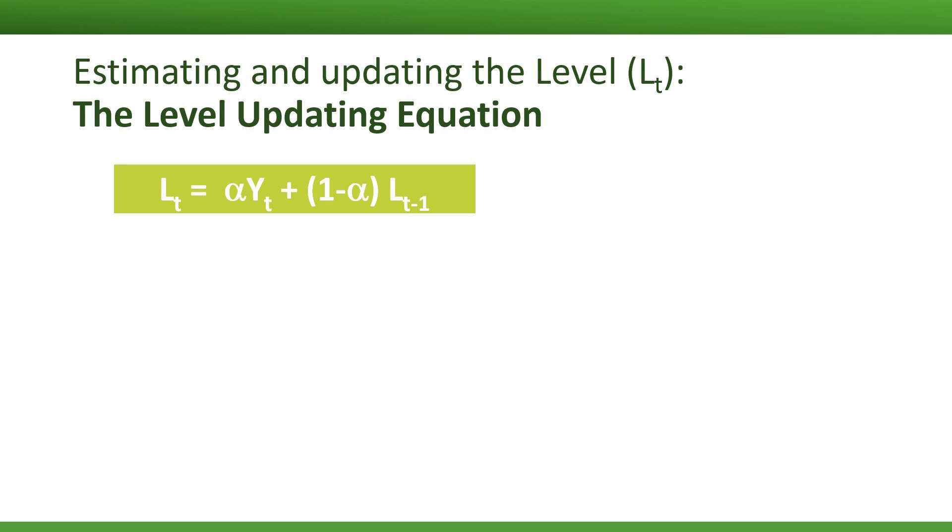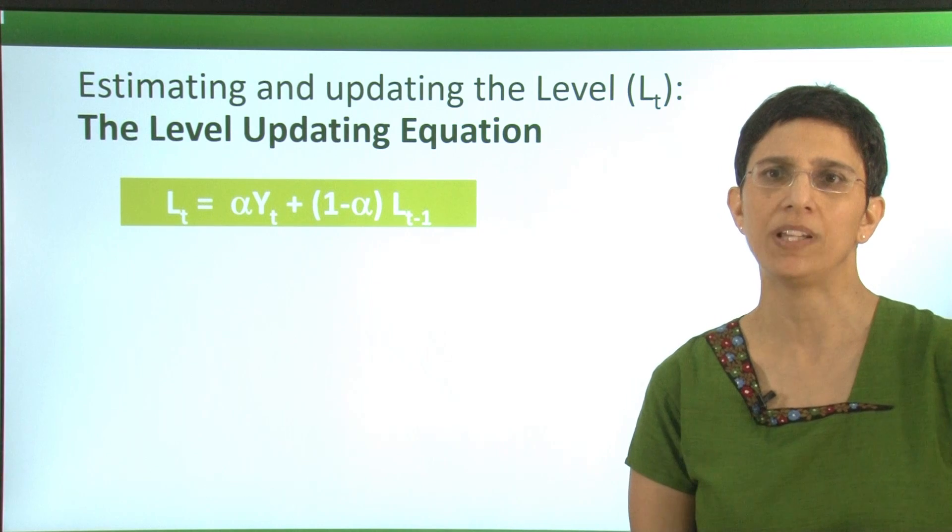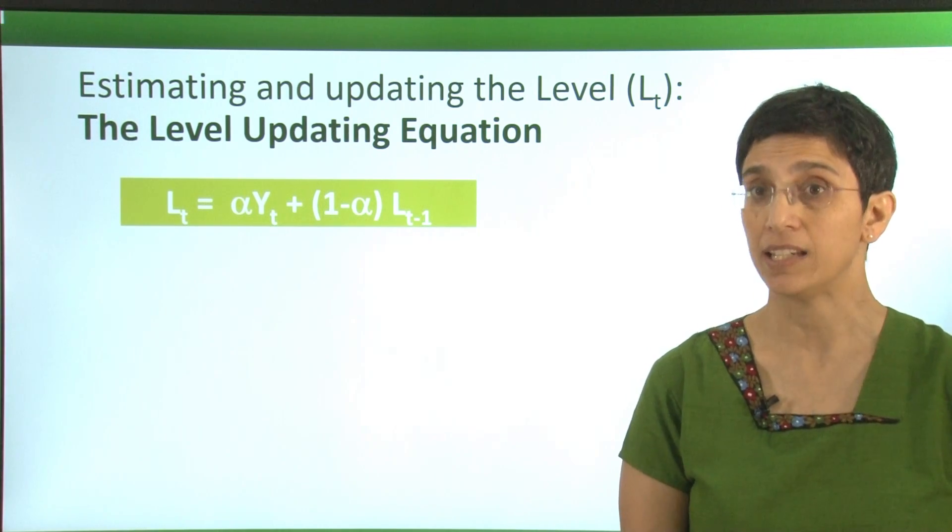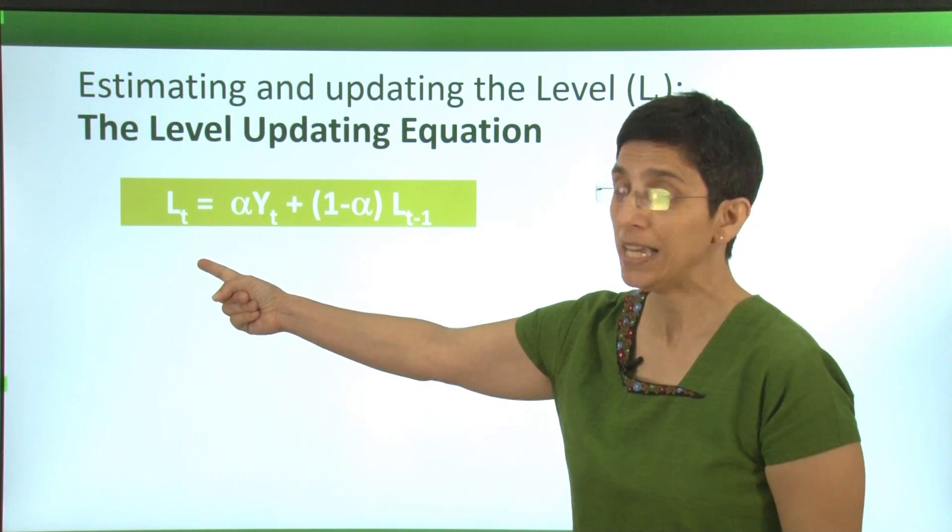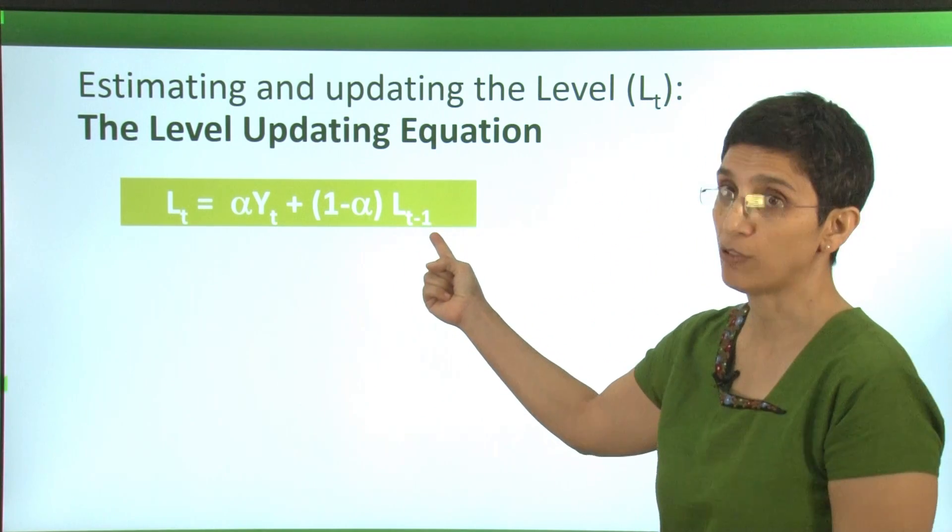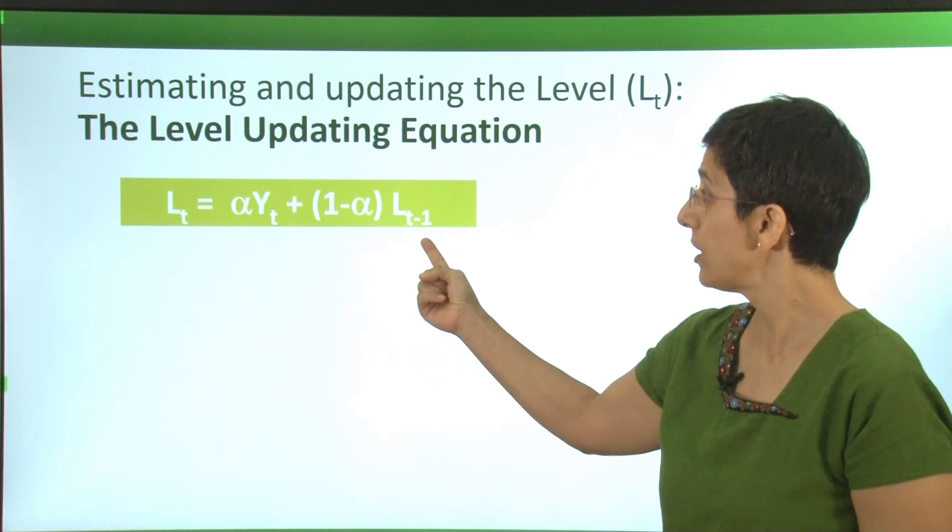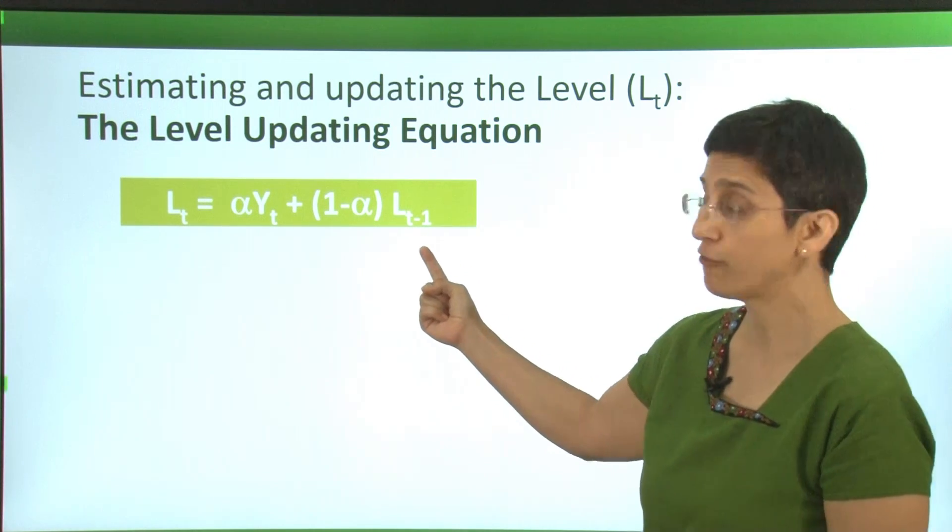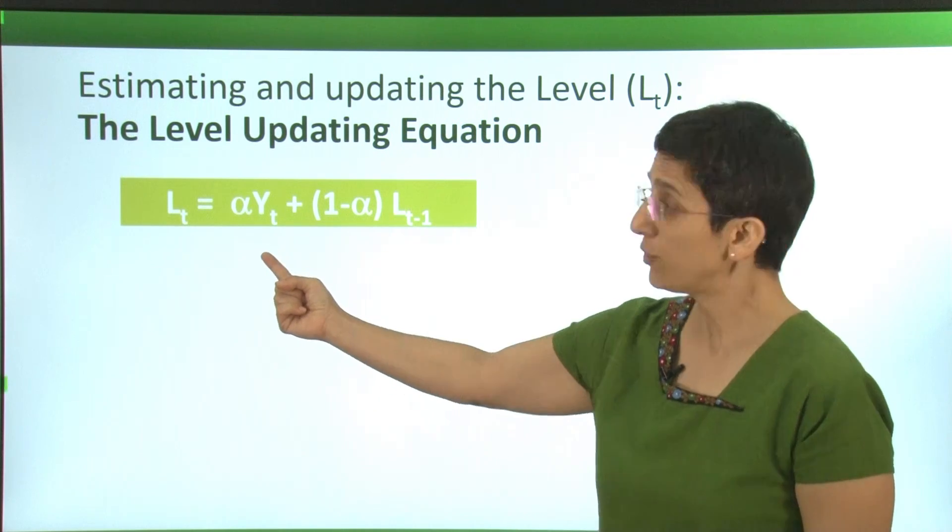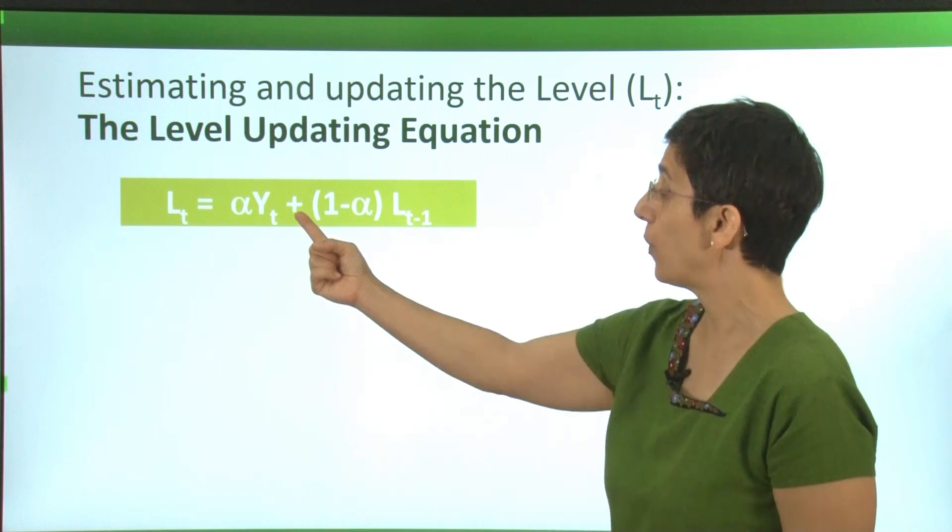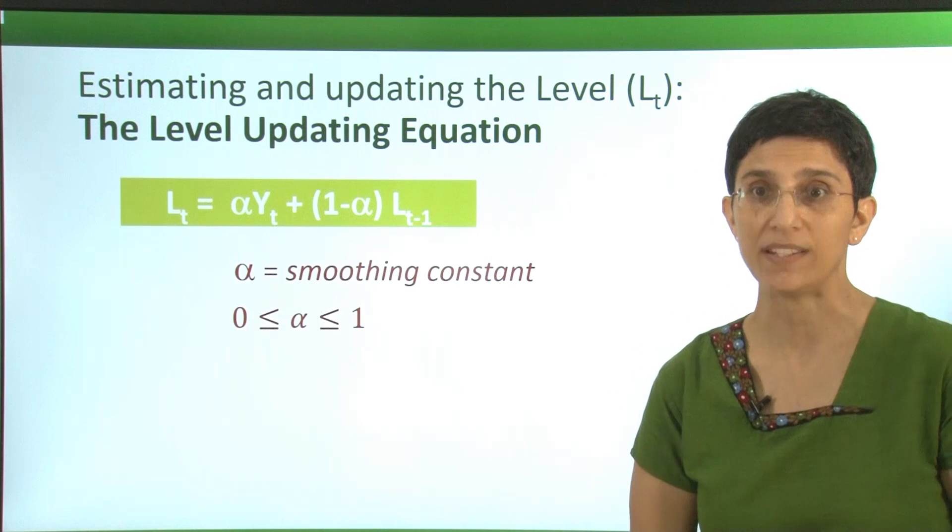To do this, we're going to have to estimate the level. To do that, we're going to use something called a level updating equation. In this equation, we're taking the level at time t and updating the previous level at time t minus 1 by integrating information from our most recent data point, y_t. You can see that it's a weighted average where we have alpha and 1 minus alpha as our weights.